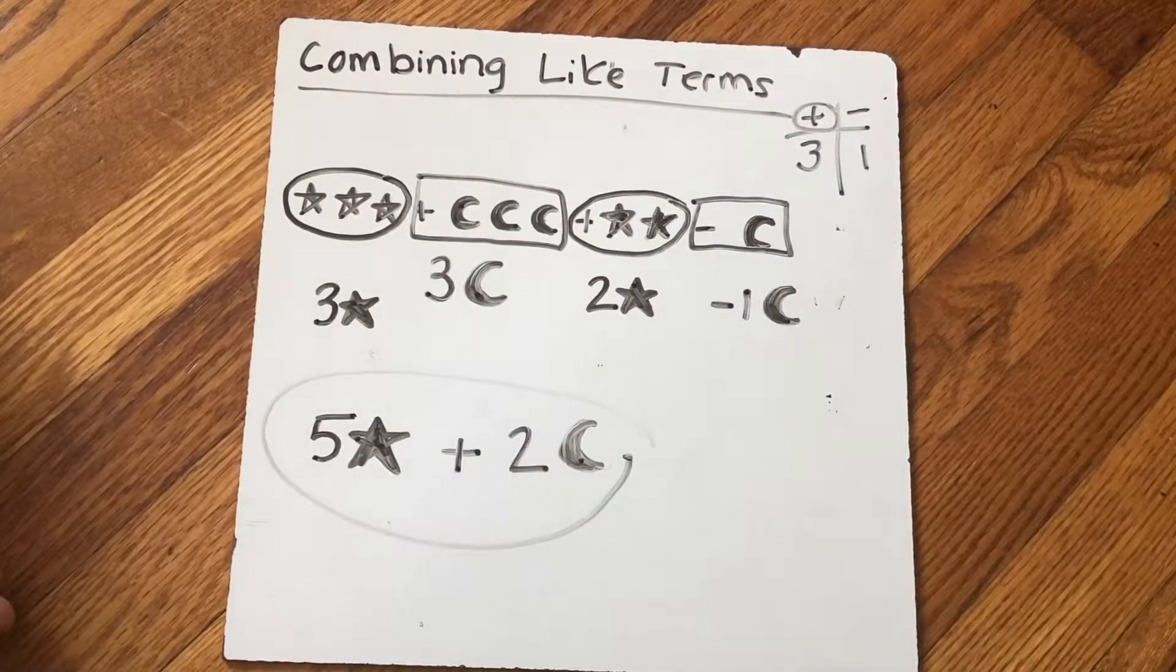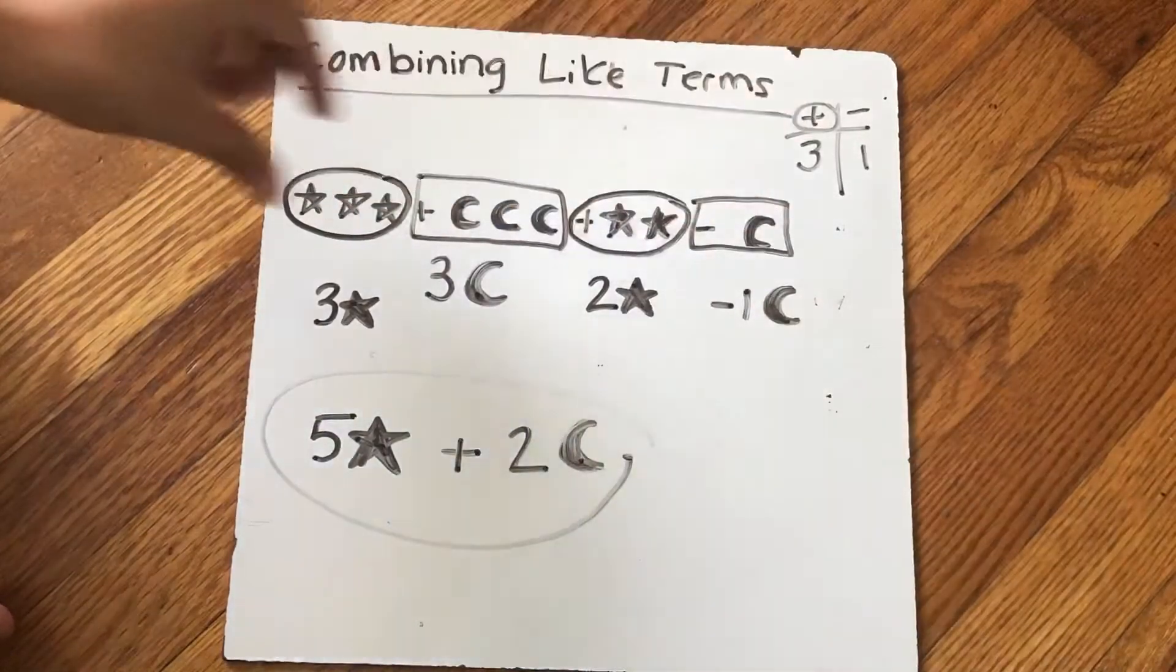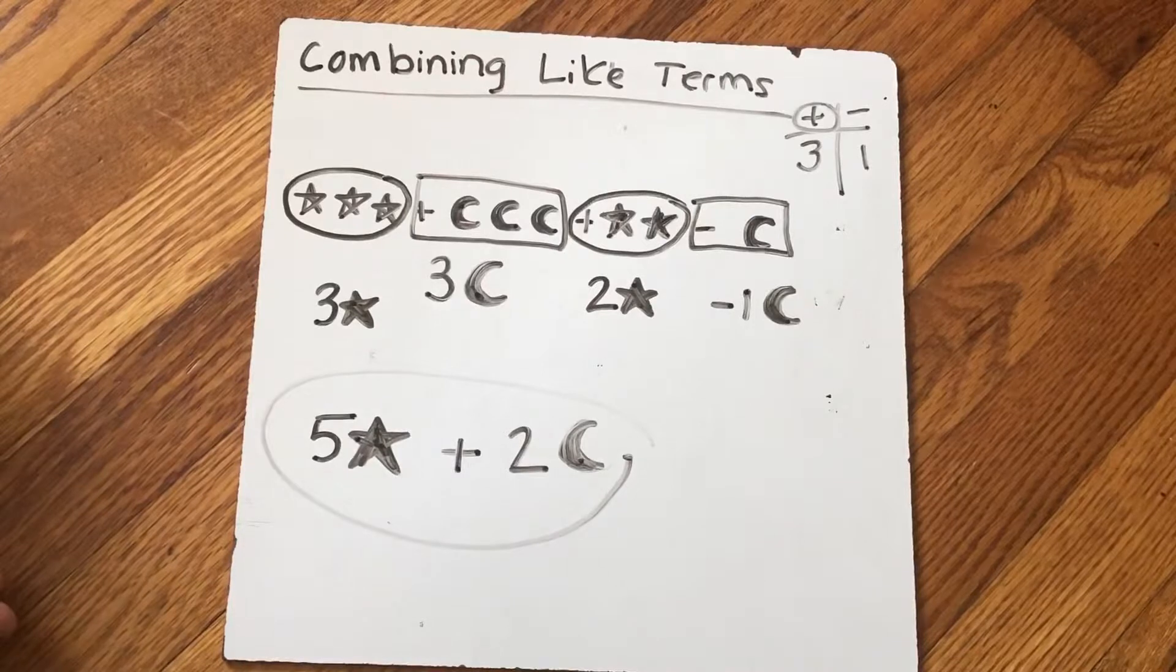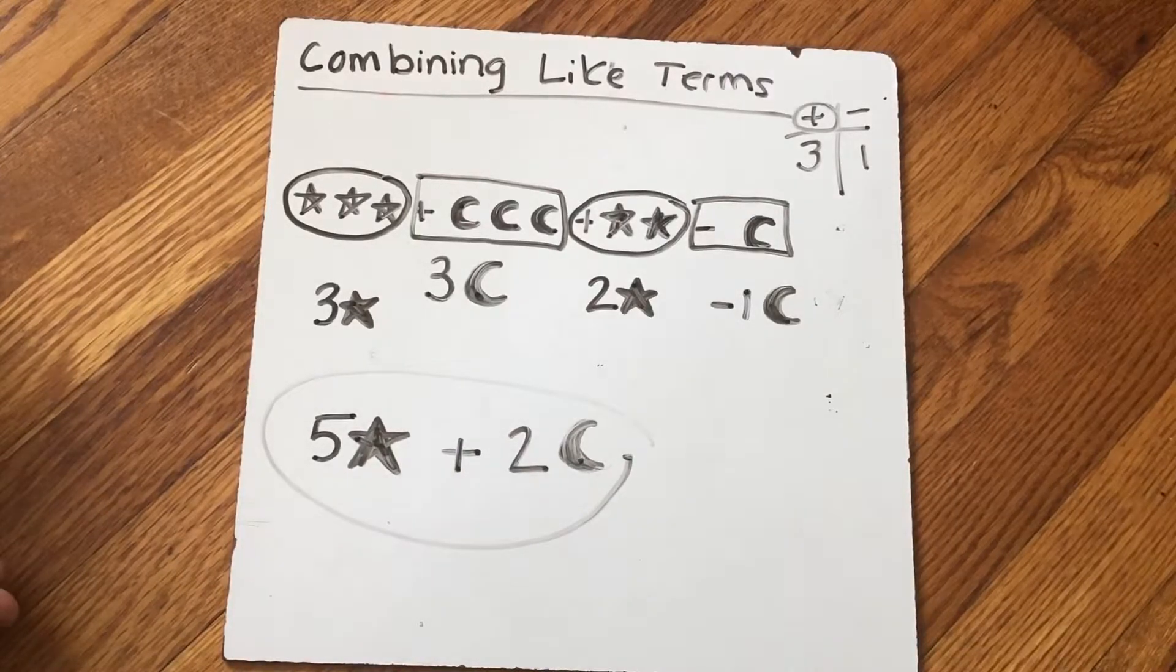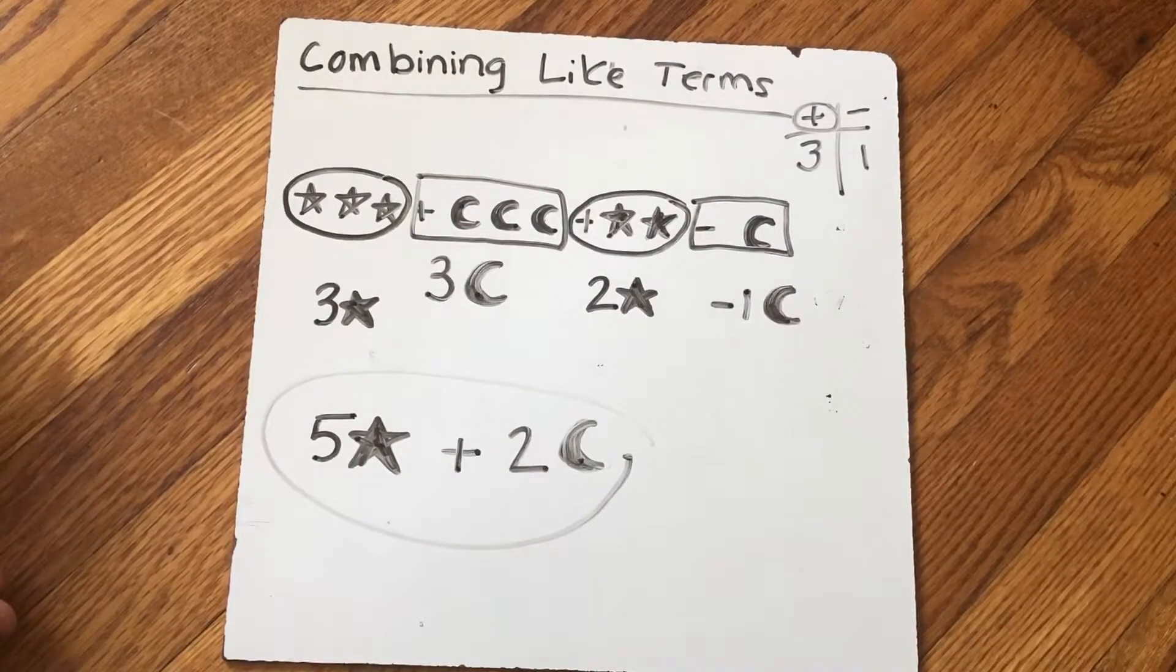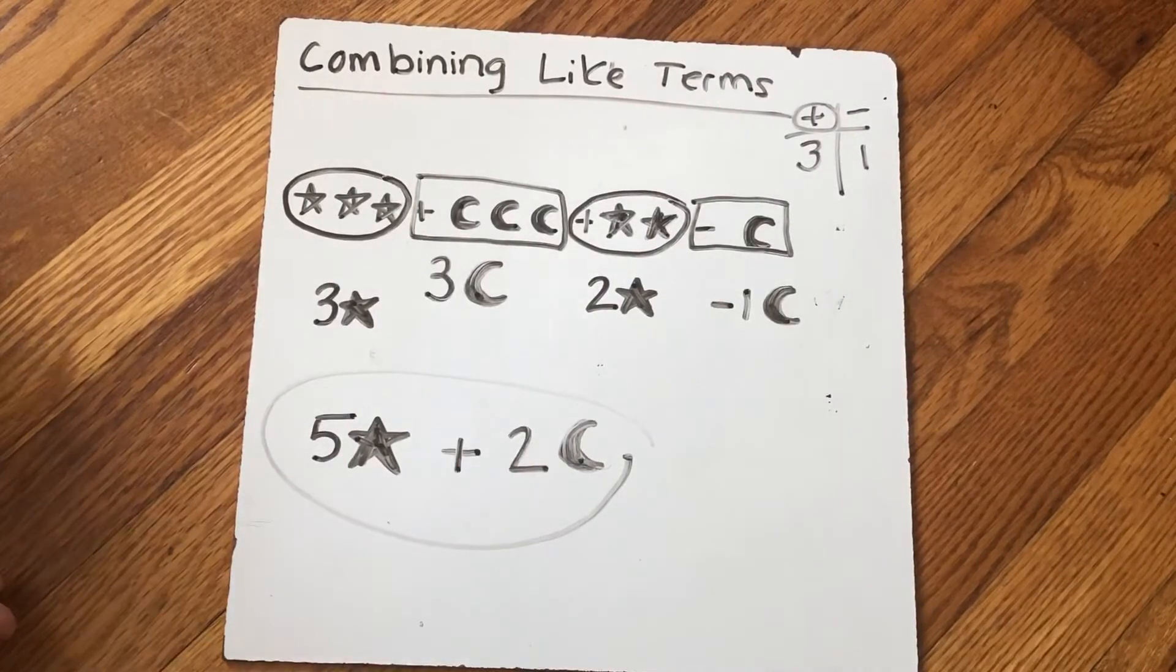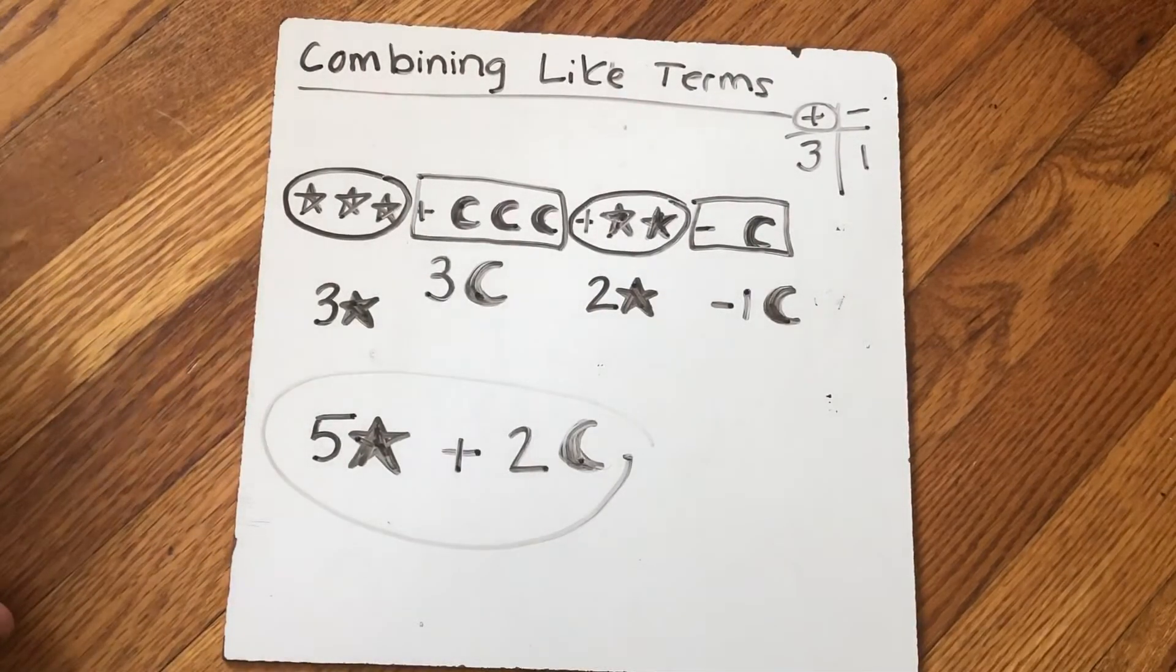So when we combine like terms, we're taking something that's longer and we're seeing what is similar and how can I combine it. In the next video, I'm going to show you three examples of combining like terms, how you're going to see it in math. But this video was just an intro to show you how to think about it, maybe outside of a traditional math way.